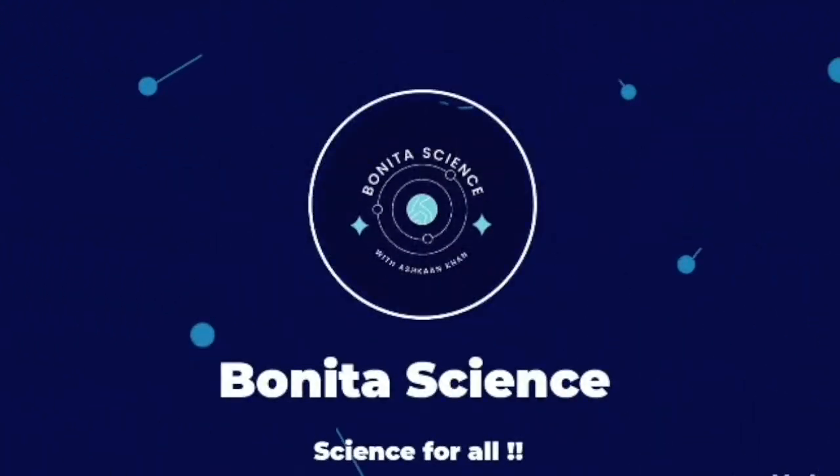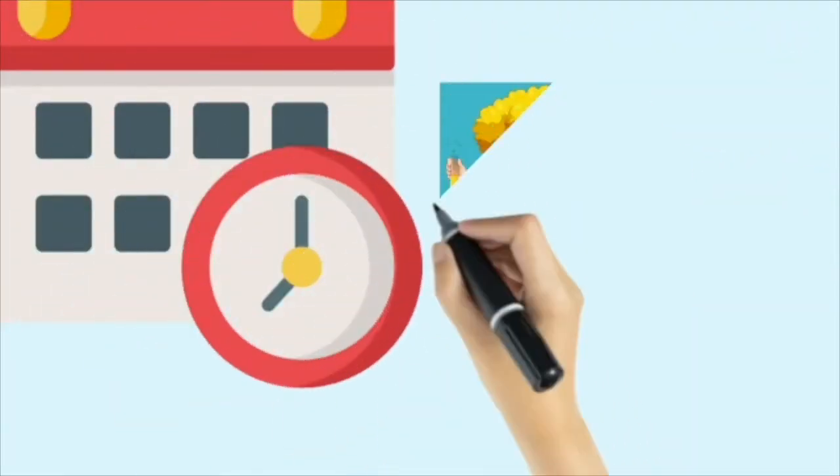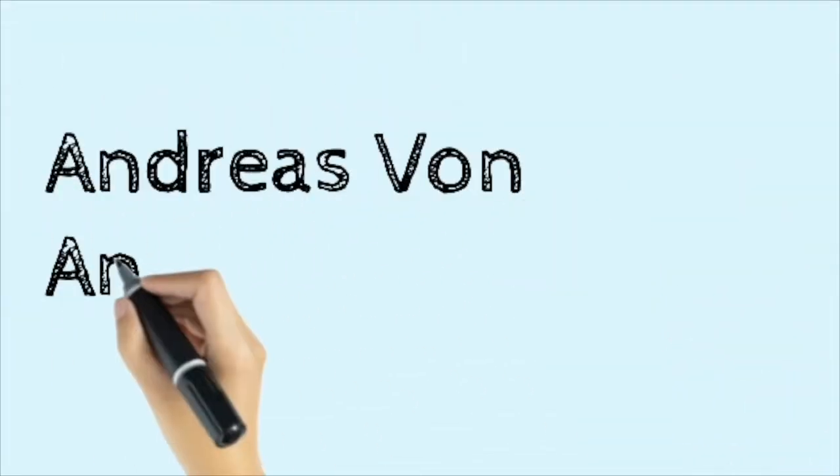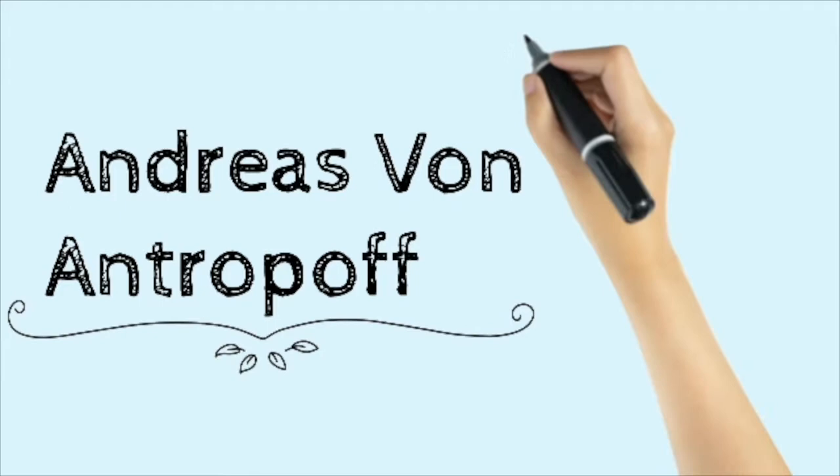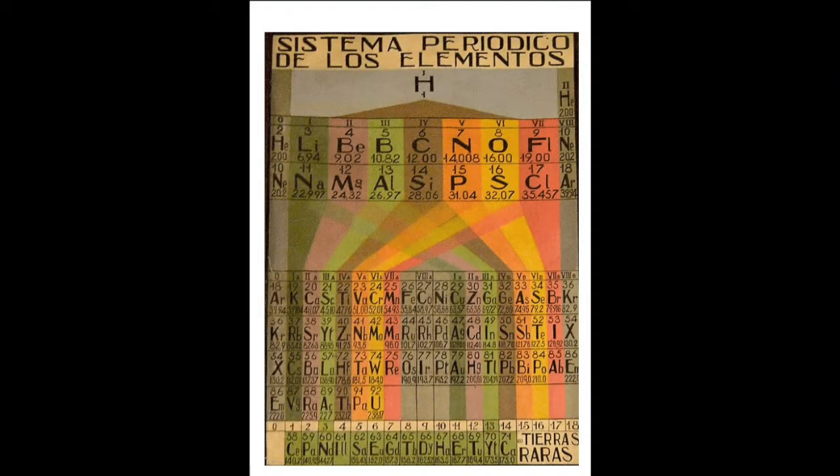Hello everyone, welcome back to Bonita Science. Element zero has been a matter of conjecture for nearly a century, and no scientist searched more ardently for it than German chemist Andreas von Antropoff. It was Antropoff who placed the theoretical element atop a periodic table of his own devising, and it was also he who thought up a prescient name for it: neutronium.